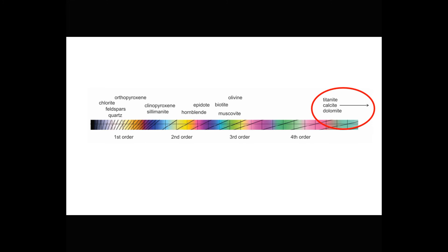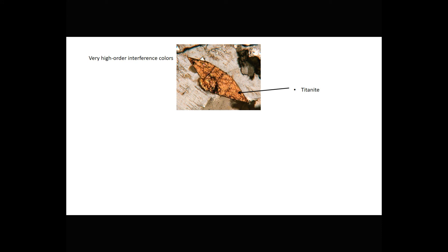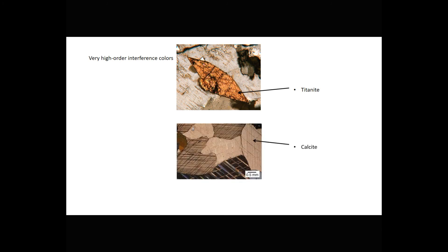Some minerals have such high birefringence that interference colors do not plot on any normal chart. Titanite, calcite, and dolomite are good examples. So, here we see a grain of titanite. The birefringence is so high, it's really hard to tell what the interference colors actually are. If we wanted to plot titanite's birefringence on the chart that we were just looking at, the chart would have to be three times wider to get it on a scale. Titanite often shows this classic wedge shape you see here. It's called a sphenoid shape. And the old name of titanite was sphene. Calcite has even greater birefringence than titanite. But both titanite and calcite have extremely high-order interference colors, so high that we can't even estimate what order they are. And sometimes these colors appear almost white.